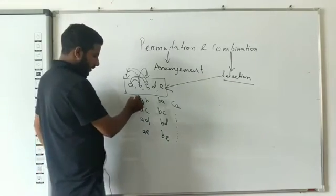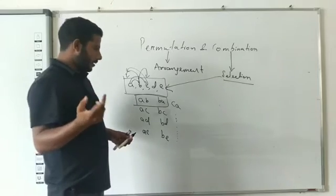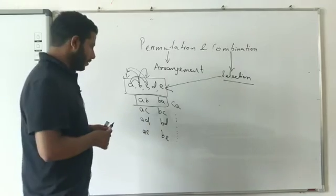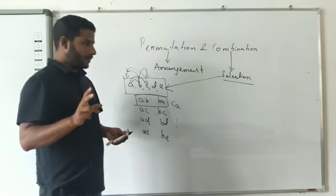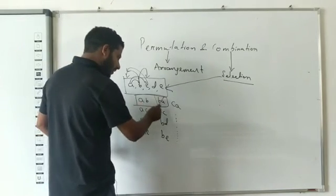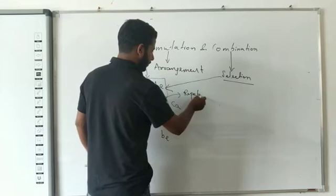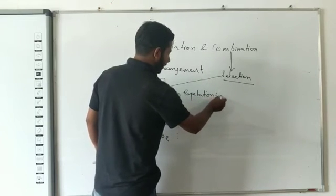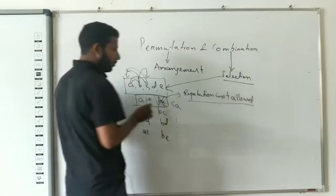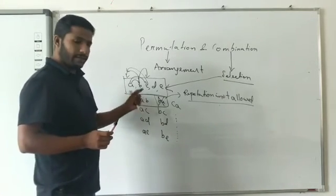There are two particular elements: A and B. In arrangement, A-B and B-A are different. However, when we have a selection — a combination — repetition is not allowed. This is the most important concept in permutation and combination. In combination, the term is selection, and repetition is not allowed.